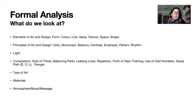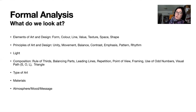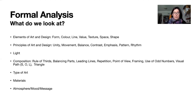With formal analysis, we are trying to look at things like the elements of art and design, which are listed here, the principles of art and design, how an artist uses light in their piece, how an artist employs composition to create a strong piece of artwork, the type of art that they're creating, the materials they might use, and the atmosphere or message of the artwork.